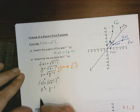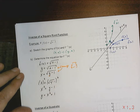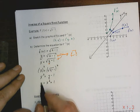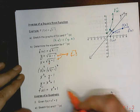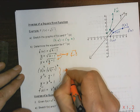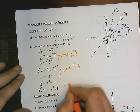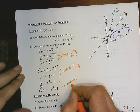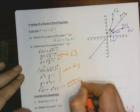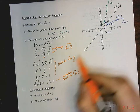So x² = y − 1. We move the −1 to the other side: y = x² + 1. Then we go back to inverse notation. This is the equation of the inverse function.